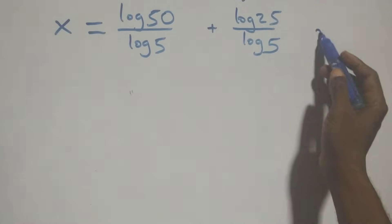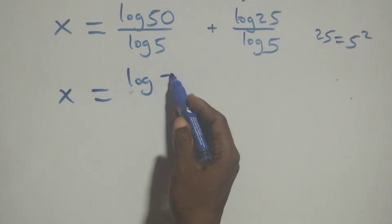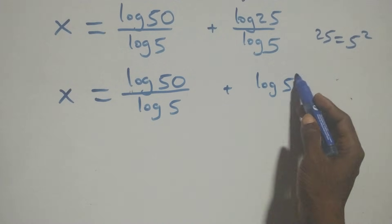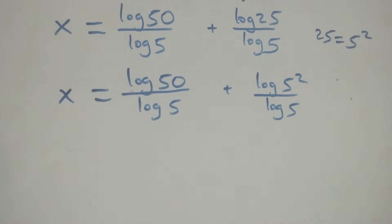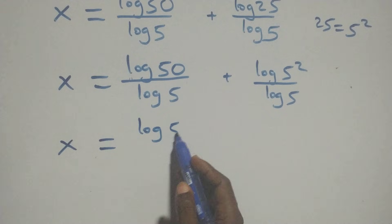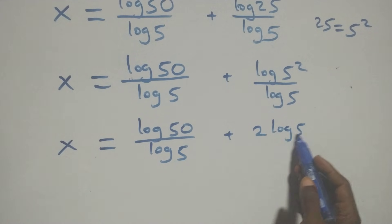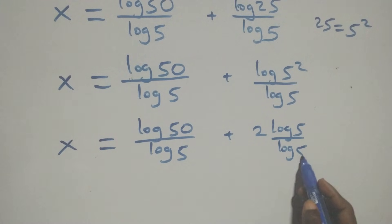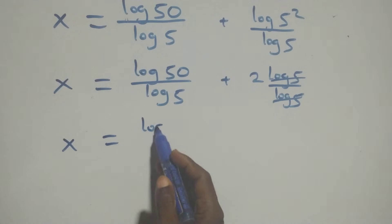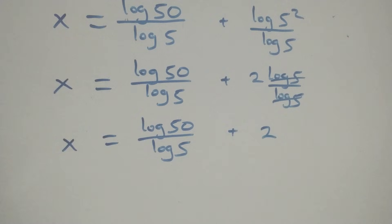We can write 25 as 5 squared, so x equals log 50 over log 5 plus log 5 squared over log 5. Applying the power log rule, 2 comes out: x equals log 50 over log 5 plus 2 log 5 over log 5. The log 5 cancels, leaving 2, so x equals log 50 over log 5 plus 2.